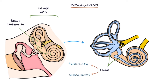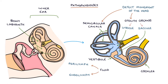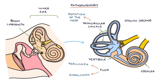The inner ear is comprised of three parts: the semicircular canals, the vestibule — which is the middle section of the labyrinth — and the cochlea. The parts of the inner ear responsible for detecting movement of the head are the semicircular canals and the otolith organs. The otolith organs are the utricle and the saccule, found within the vestibule. The semicircular canals detect rotation of the head, and the otolith organs detect gravity and linear acceleration.